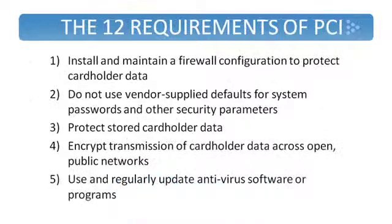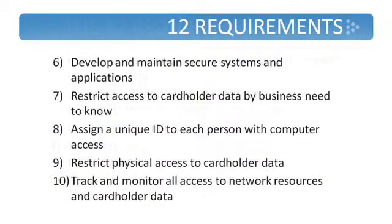When we talk about the 12 requirements of PCI, even though there are 250 security controls, those requirements are separated into 12 categories. Briefly, they are: install and maintain a firewall configuration to protect cardholder data; do not use vendor-supplied defaults for system passwords and other security parameters; protect stored cardholder data; encrypt transmission of cardholder data across open public networks; use and regularly update antivirus software or programs; develop and maintain secure systems and applications; and restrict access to cardholder data by business need to know. Assign a unique ID to each person with computer access.